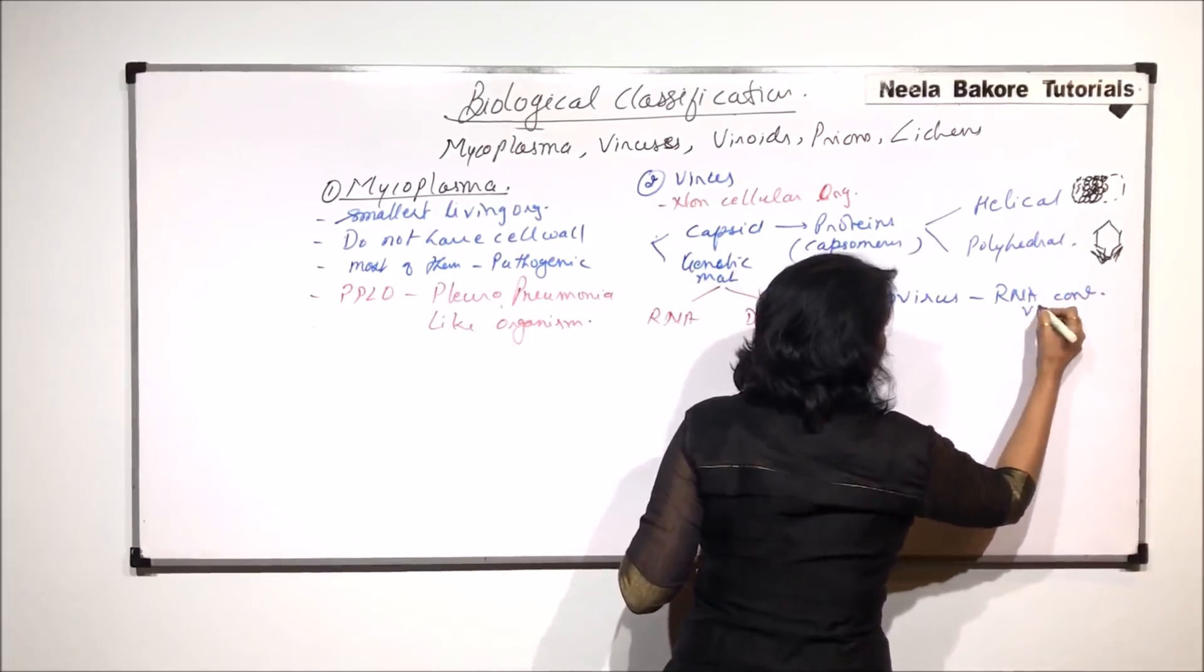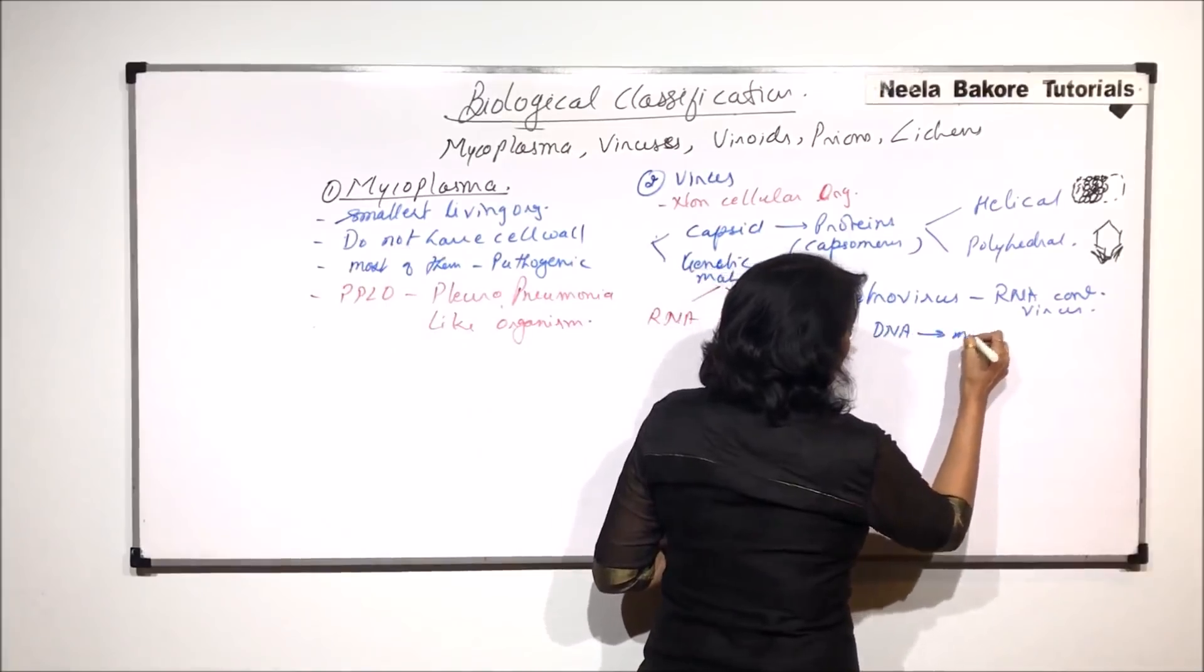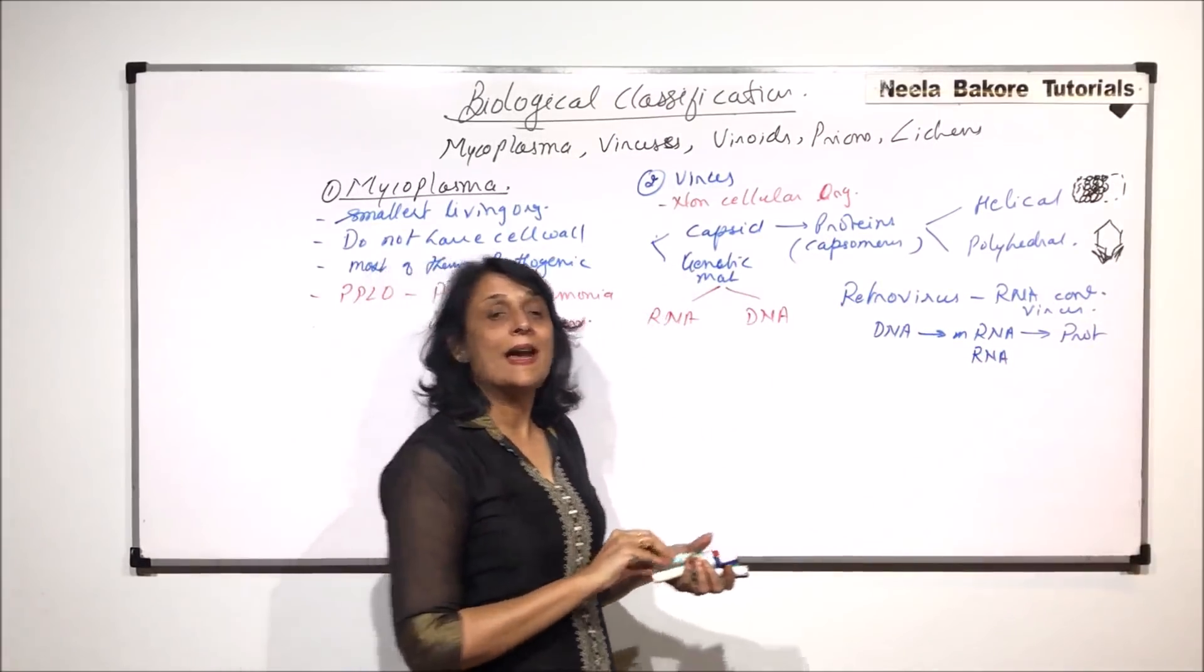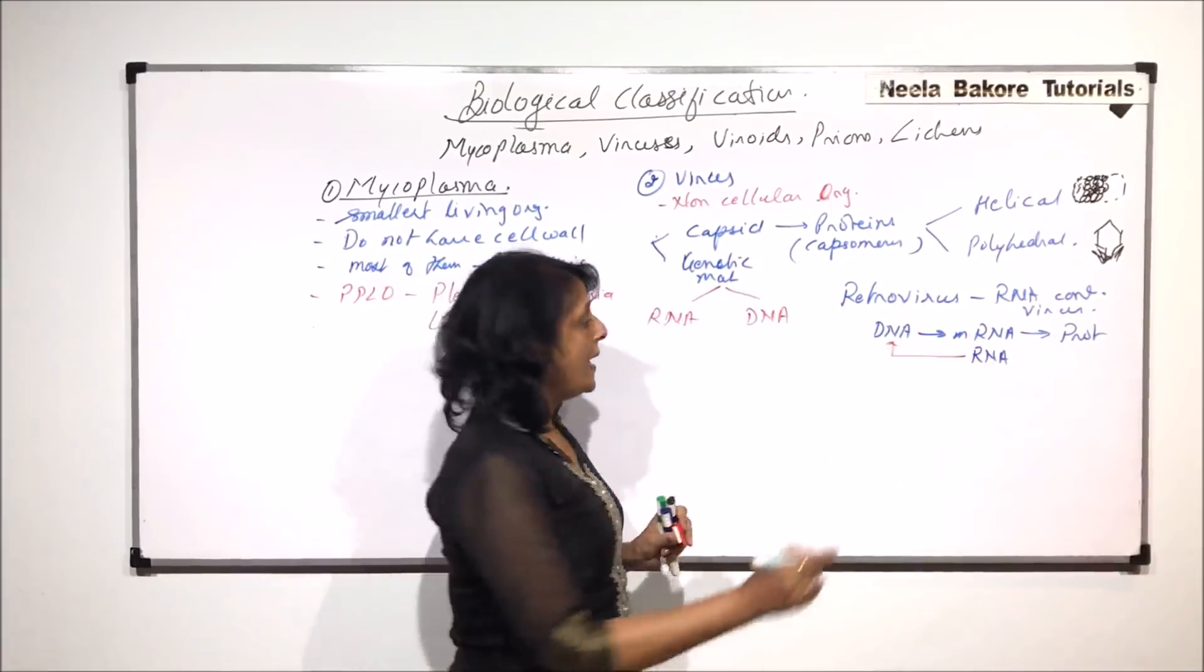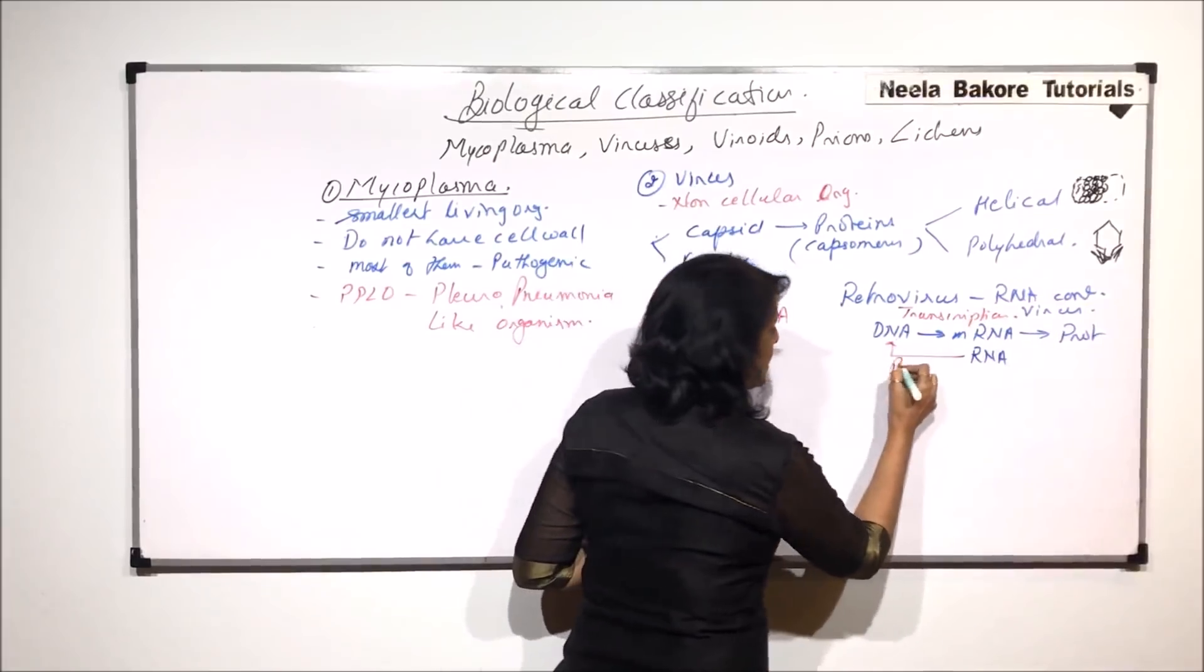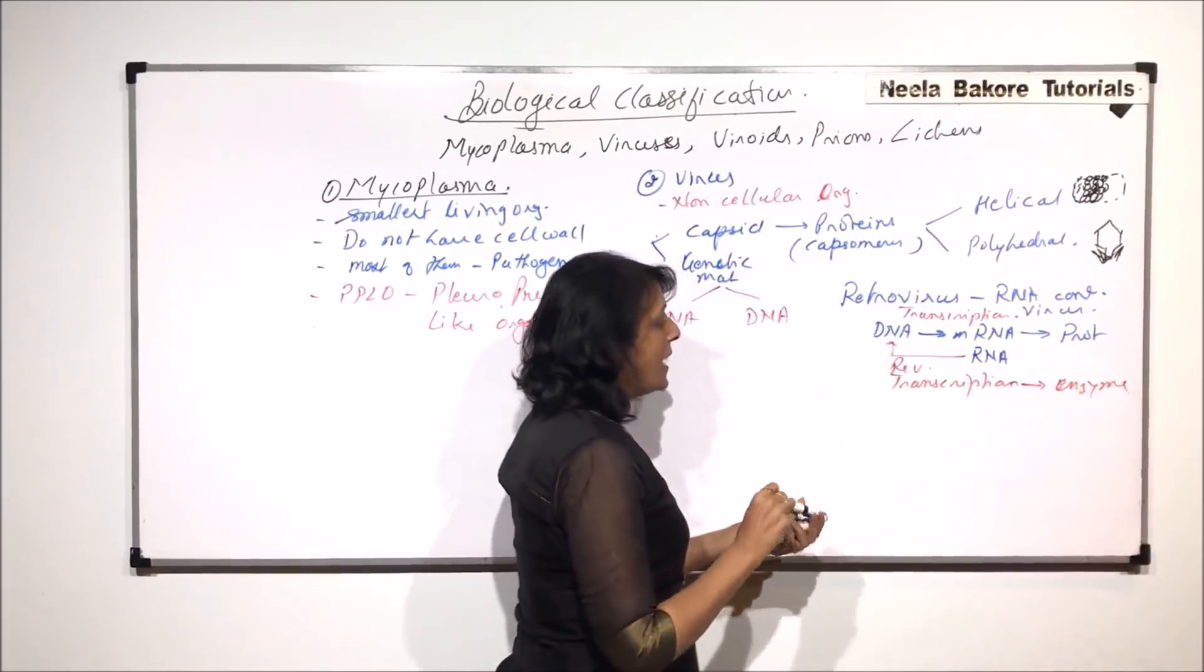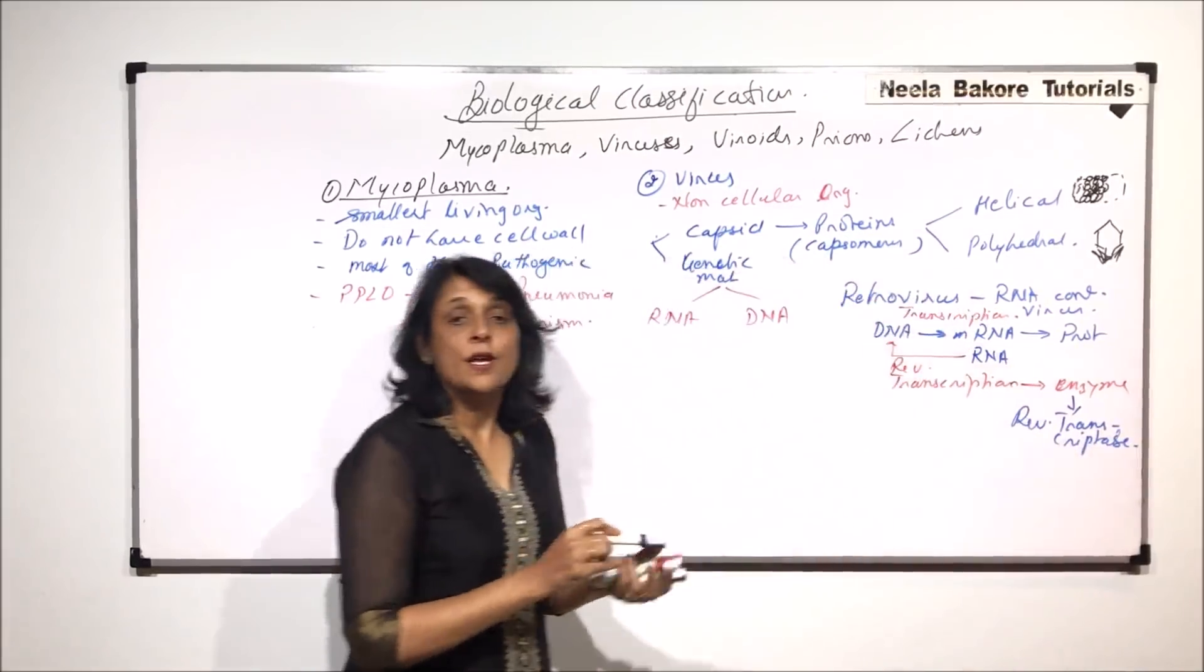We have already talked of central dogma. Central dogma means DNA to mRNA, this is transcription, and from here to protein synthesis, this is translation. But if some organisms have RNA as genetic material, there is an additional step. From RNA, DNA is synthesized and then the central dogma takes place. This reverse process is known as reverse transcription, and the enzyme required is reverse transcriptase.